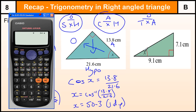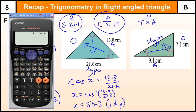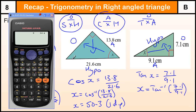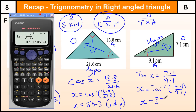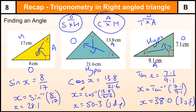The last example for finding angles: this is the hypotenuse, this is the opposite, this is the adjacent. We are using the opposite and the adjacent and the angle, so that is the tangent formula. tan(x) = opposite/adjacent = 7.1/9.1. So x = tan⁻¹(7.1/9.1), which gives an answer of 38.0°. When asked for a suitable degree of accuracy, that is usually three significant figures, or to the nearest degree for angles.